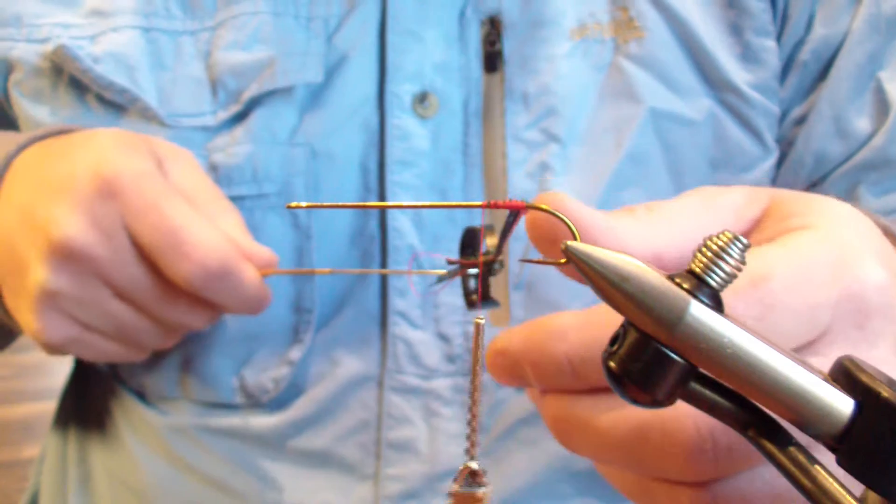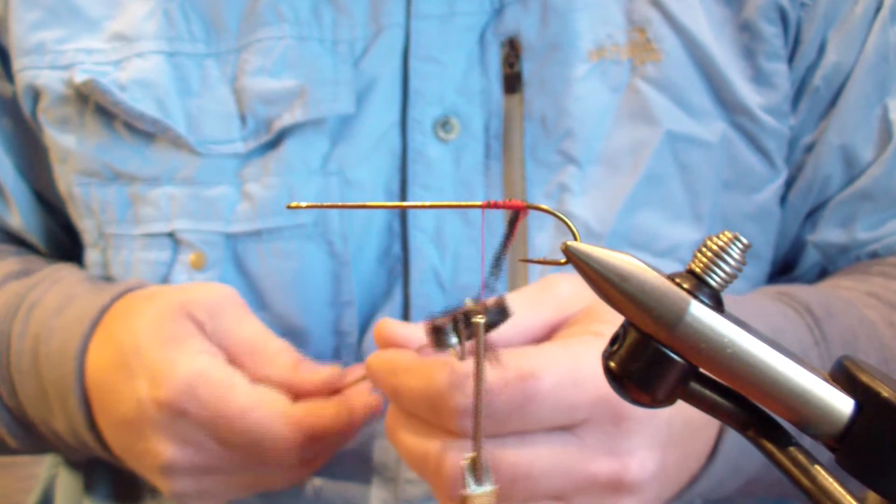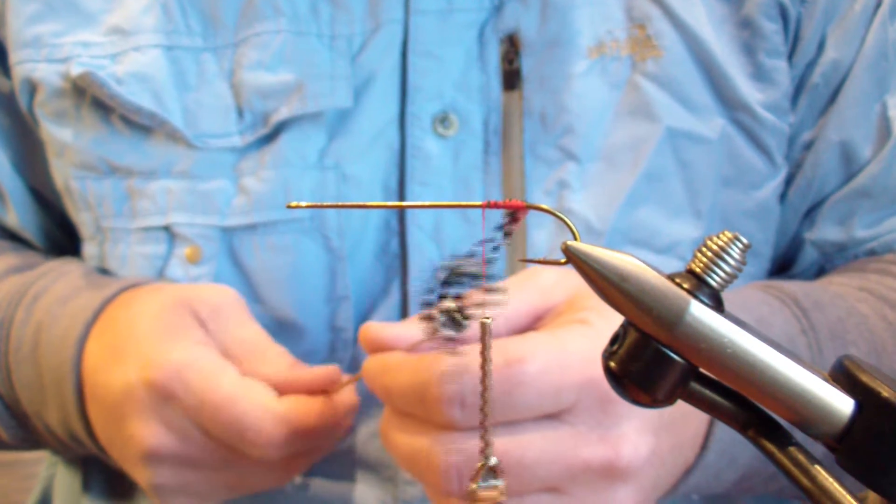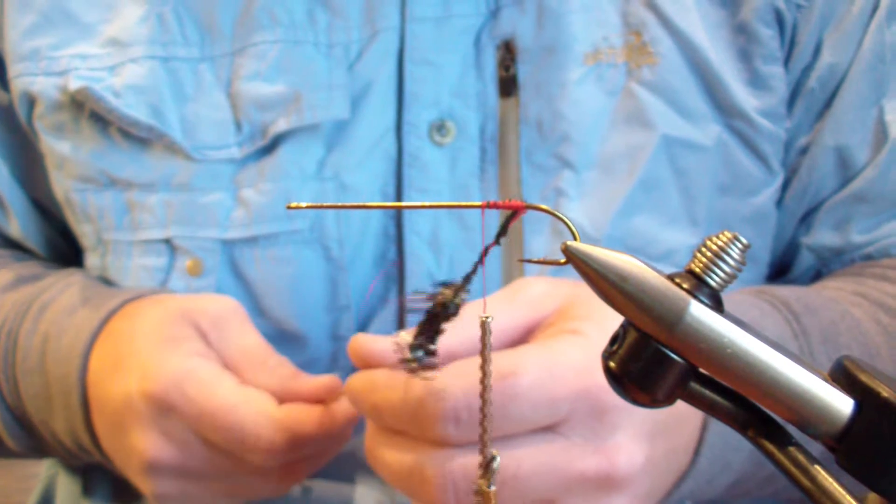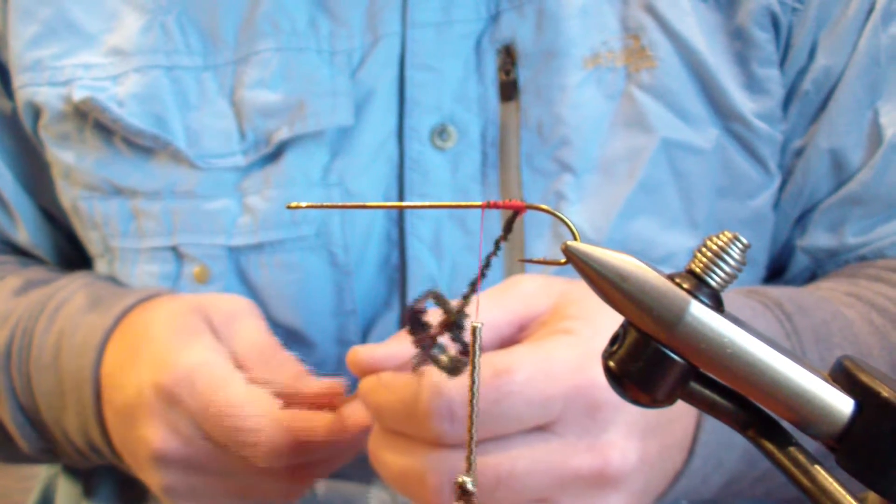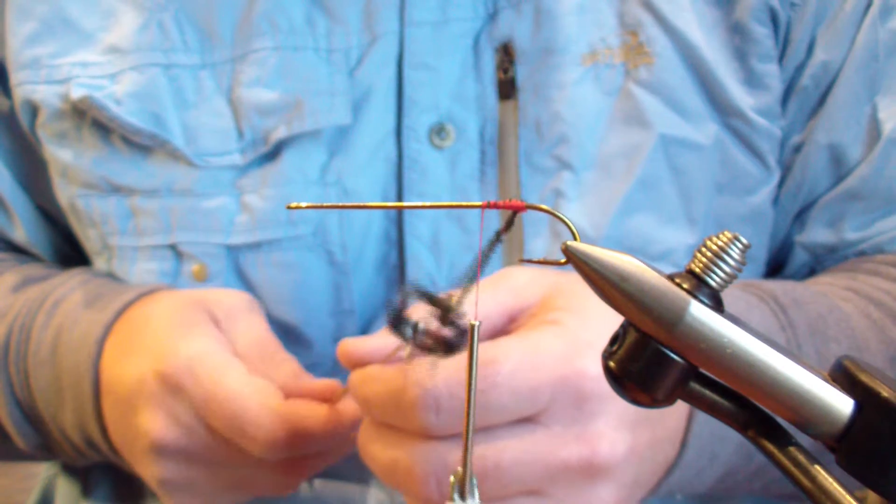Then I scoop up my hackle pliers and I twist. Now you're going to twist until you see the rope. You've got to keep even tension until you see the rope start to form all the way back to the hook.